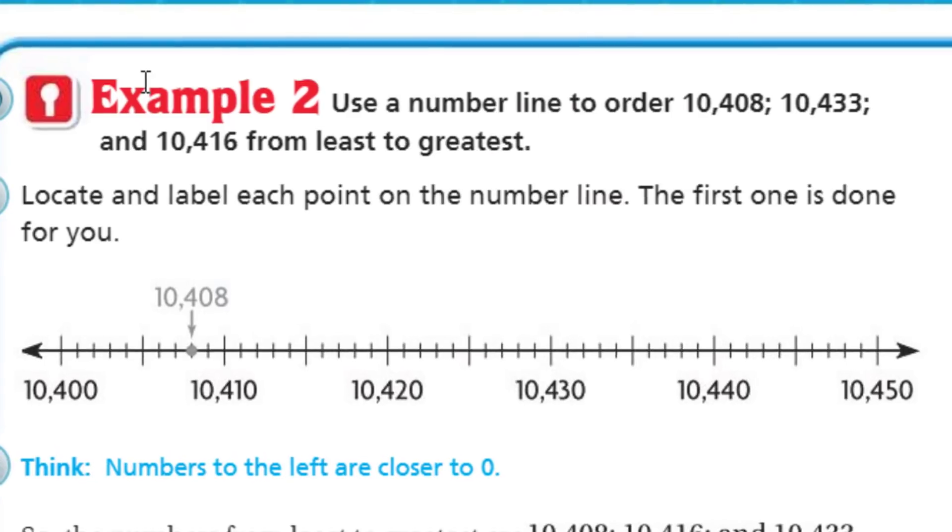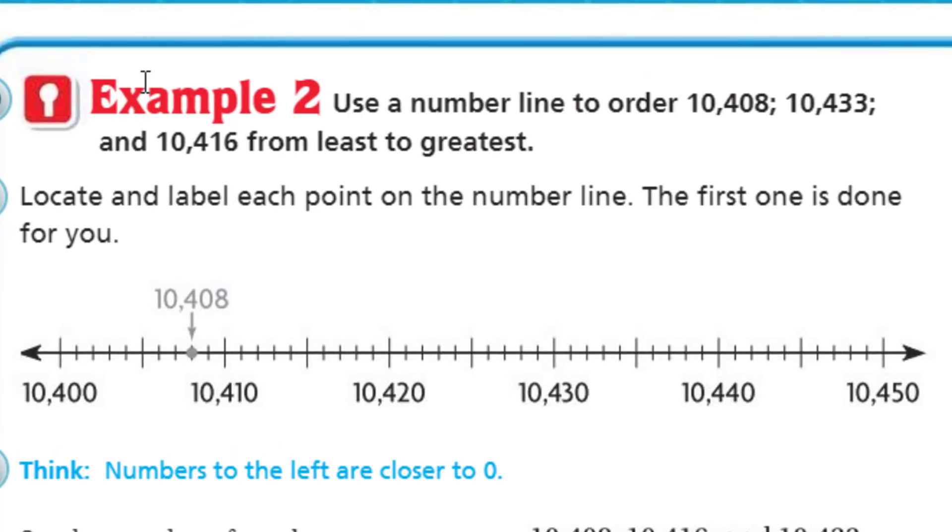Let's move on to the next situation. Now, this is example two. Use a number line to order ten thousand four hundred eight. Remember it said four hundred and eight. Don't be fooled. No, no, no, no. It is ten thousand four hundred eight. And then we have ten thousand four hundred thirty-three and ten thousand four hundred sixteen from least to greatest.